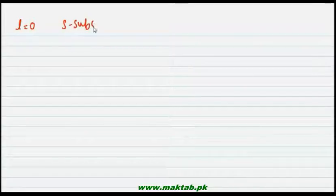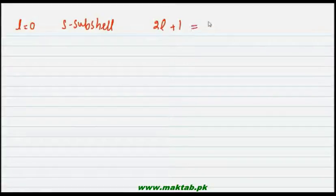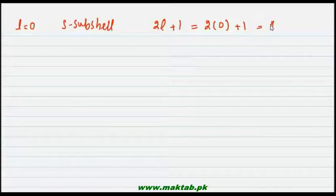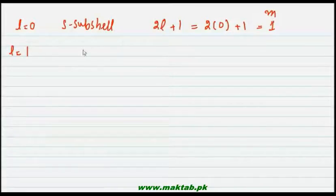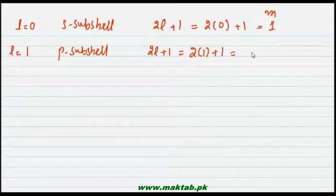When l is equal to 0, this is the s subshell. Using the formula 2l + 1, we get 2 × 0 + 1 = 1, so m has 1 value. When l is equal to 1, it is the p subshell. Putting l = 1 into the formula gives 2 × 1 + 1 = 3, so m has 3 values.